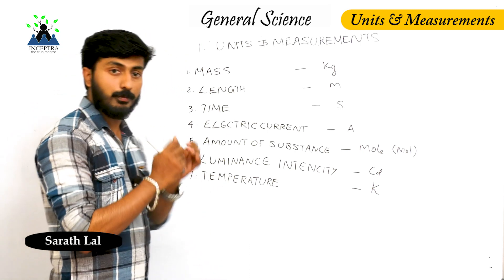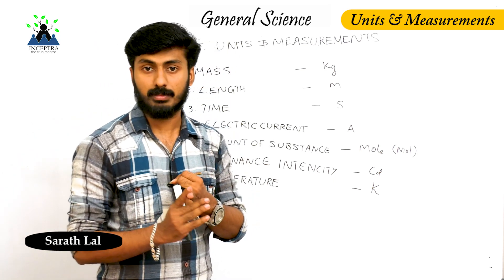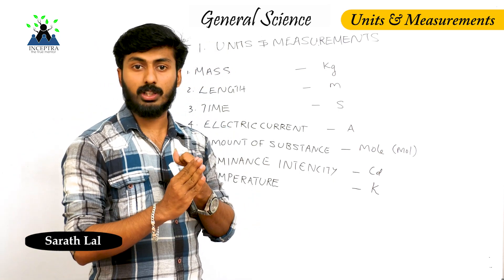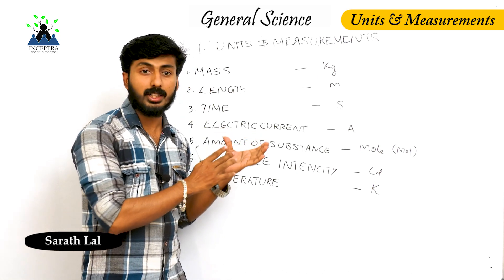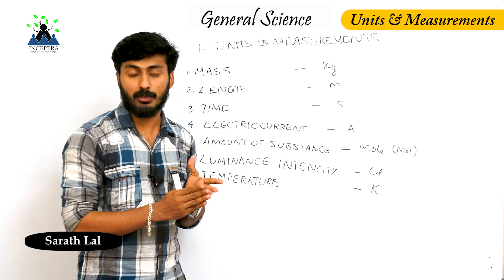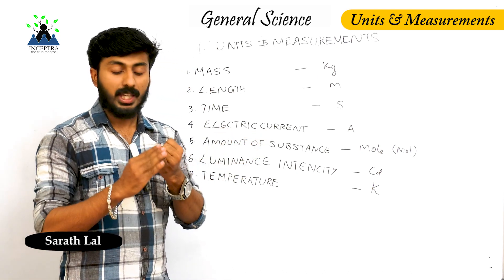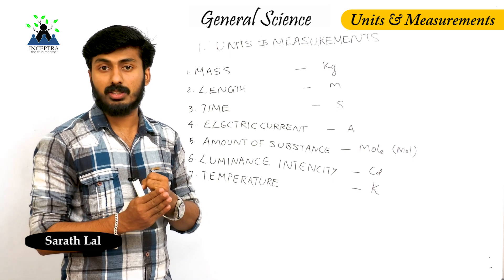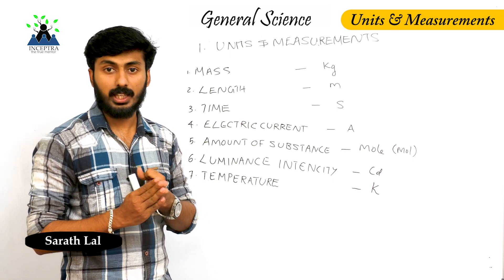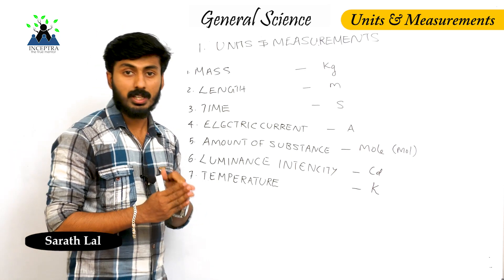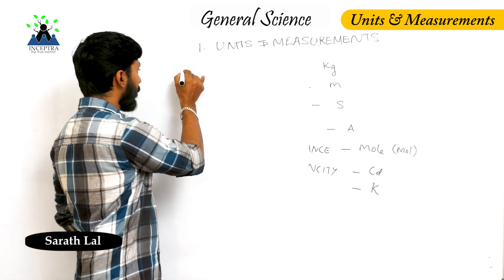So let's take the two types of physical quantities: fundamental quantities and derived quantities. We will also learn about the main systems of units: the MKS system, CGS system, and FPS system.